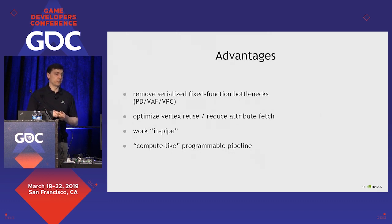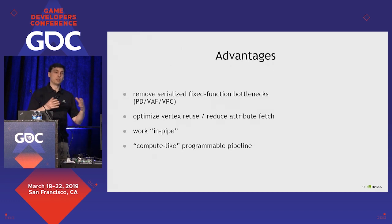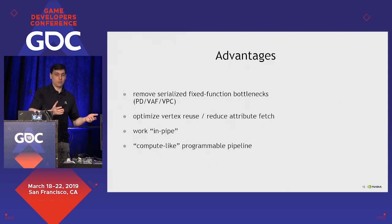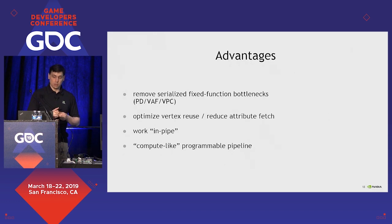So the idea is to say, instead of having fixed function, let's make this entirely programmable, which means it will scale to all the cores you've got on the GPU. A new Turing GPU with its 4,000-some cores means you get a lot more processing power and you can spend it on processing geometry if that's what you need to do. And you don't have this bottleneck in the middle of your vertex shader and your pixel shader telling you this is the fixed rate of triangles I can output and this is your upper limit. Now basically it's down to how clever your code can be.